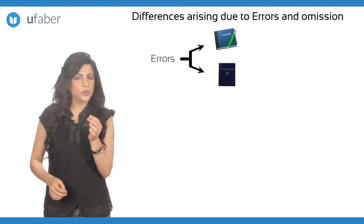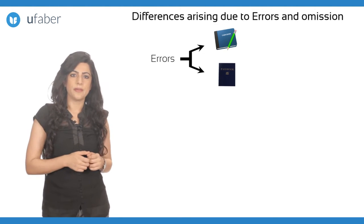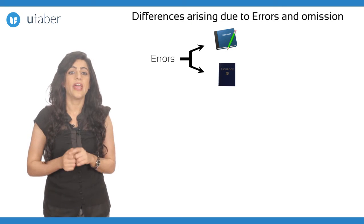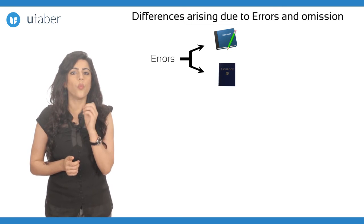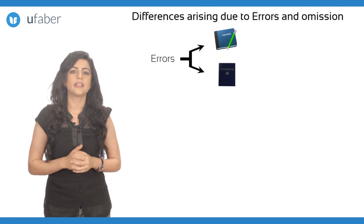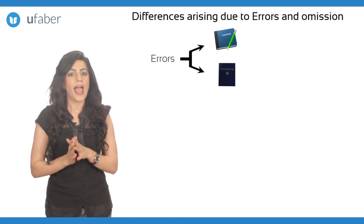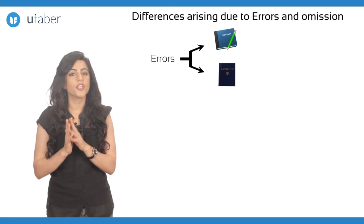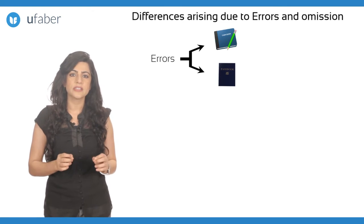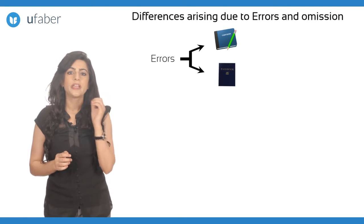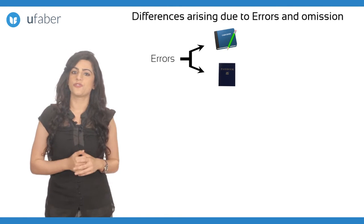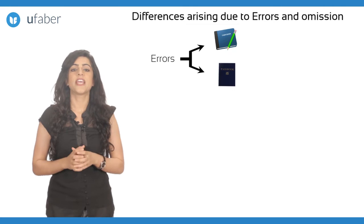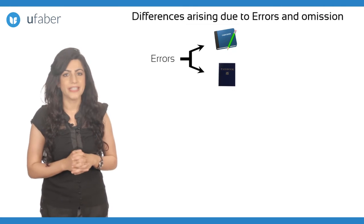What could these errors be? The errors that may occur while recording in the cash book and pass book are usually errors committed by a person passing the entry. These errors typically are as follows.